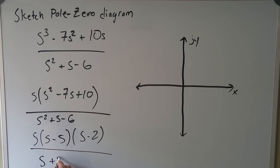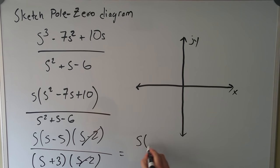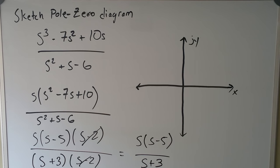On the bottom, this factors to s plus 3 and s minus 2. As we can see, the s minus 2 and s minus 2 cross each other out, and we're left with the function s times s minus 5 over s plus 3. We can't simplify that any further, so we're going to move on to plotting our pole-zero diagram.